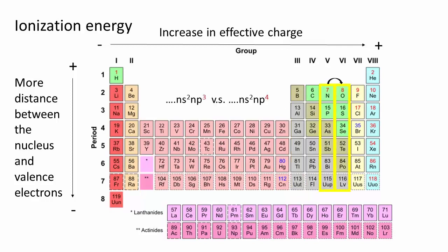We also have an exception between group 5 and group 6. This is because the p orbitals in the group 5 atom have a single electron in each and all share the same spin. In group 6, one of the p orbitals is doubly occupied and the electron of opposite spin is destabilized by the other electron in its orbital, making it easier to remove.